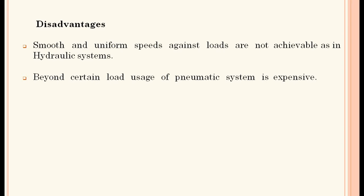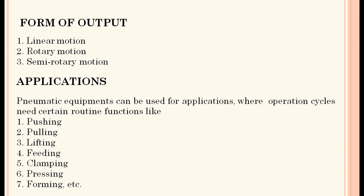There are also a few disadvantages: smooth and uniform speeds against loads are not achievable as in hydraulic systems, and beyond a certain load, the use of pneumatic systems becomes expensive. The forms of output achievable are linear motion, rotary motion, or semi-rotary motion — these three forms can be achieved from a pneumatic system.